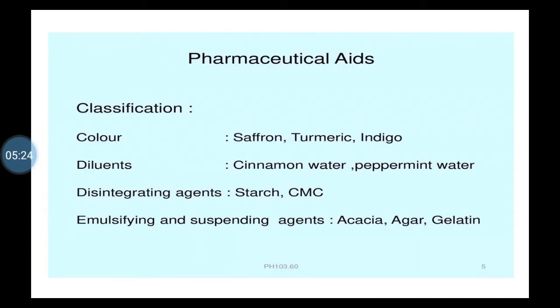Classification according to use and application is very important for pharmaceutical aids. The very first class is coloring agent — the agent used for the purpose of imparting color to the formulation. Many substances are used as coloring agents; naturally occurring ones are saffron, turmeric, and indigo. Turmeric is healthy and is also used in many Ayurvedic preparations as a coloring agent.